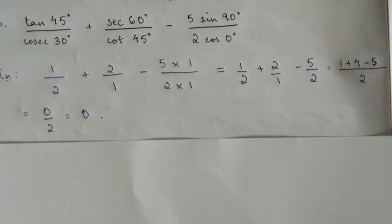So we get 1 plus 4 minus 5 over 2, which equals 0 over 2. When the numerator is 0, the answer will always be 0. So the final answer we get here is 0.